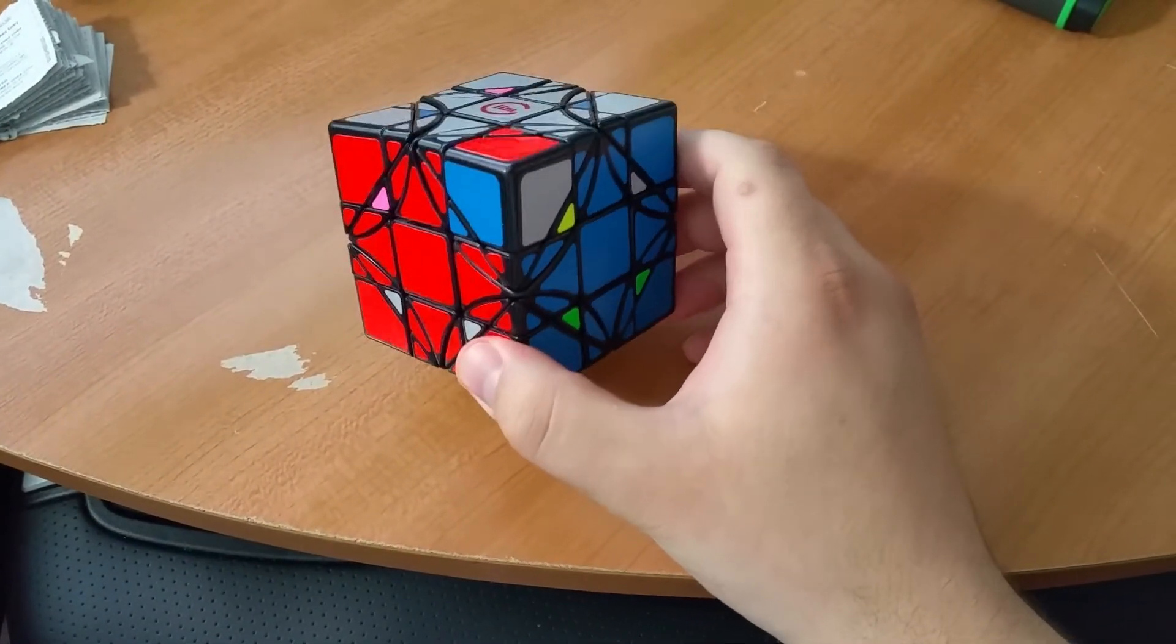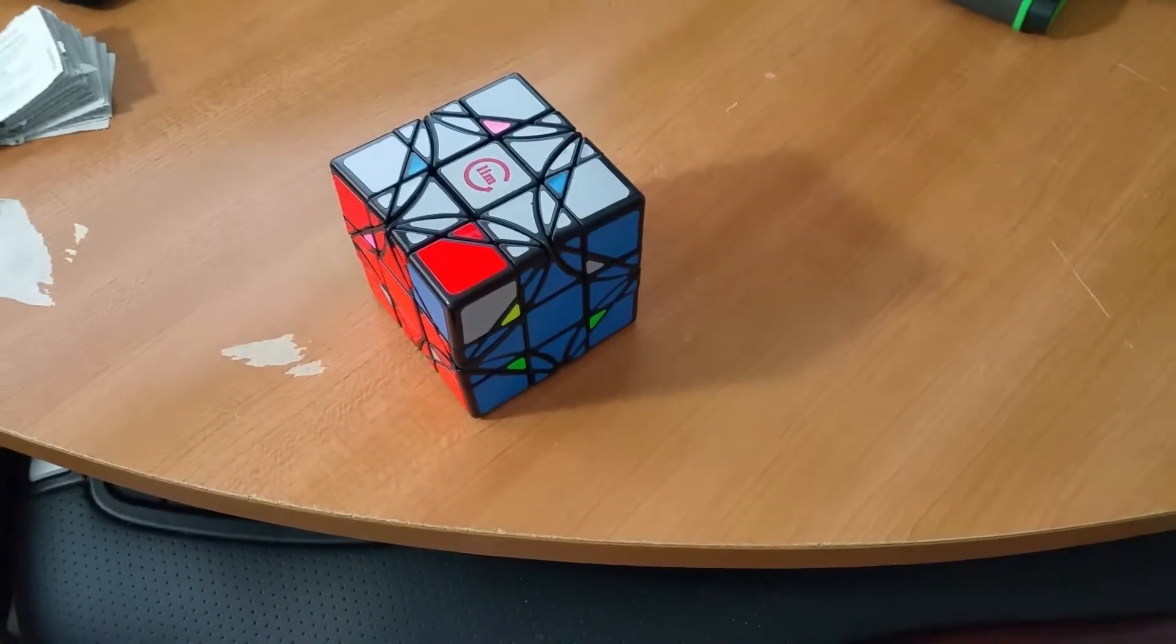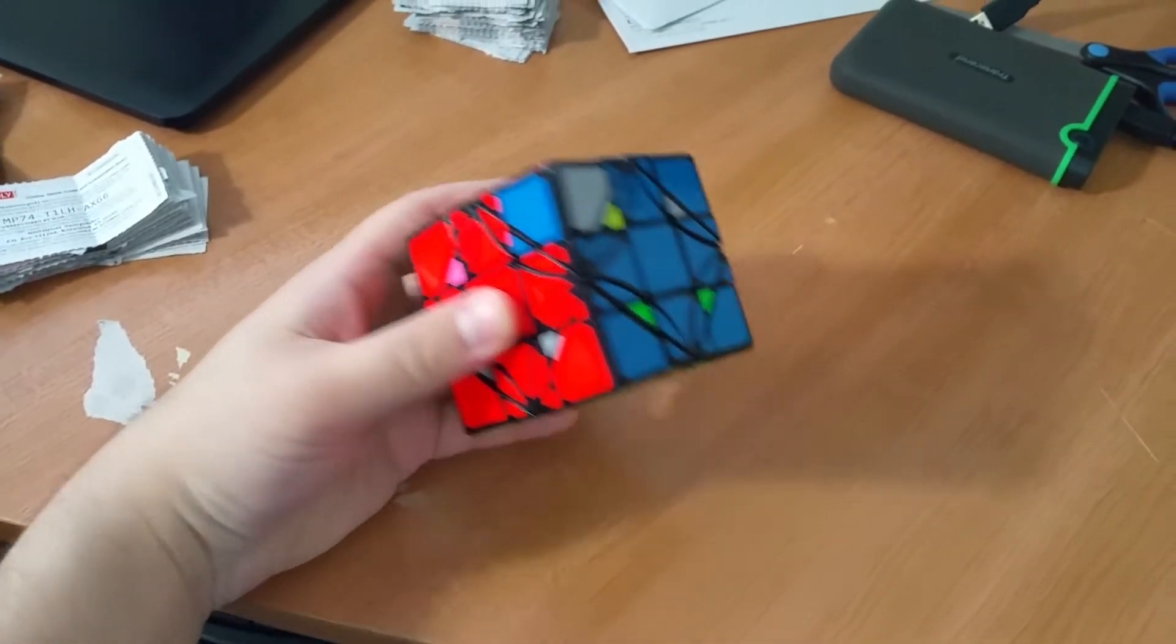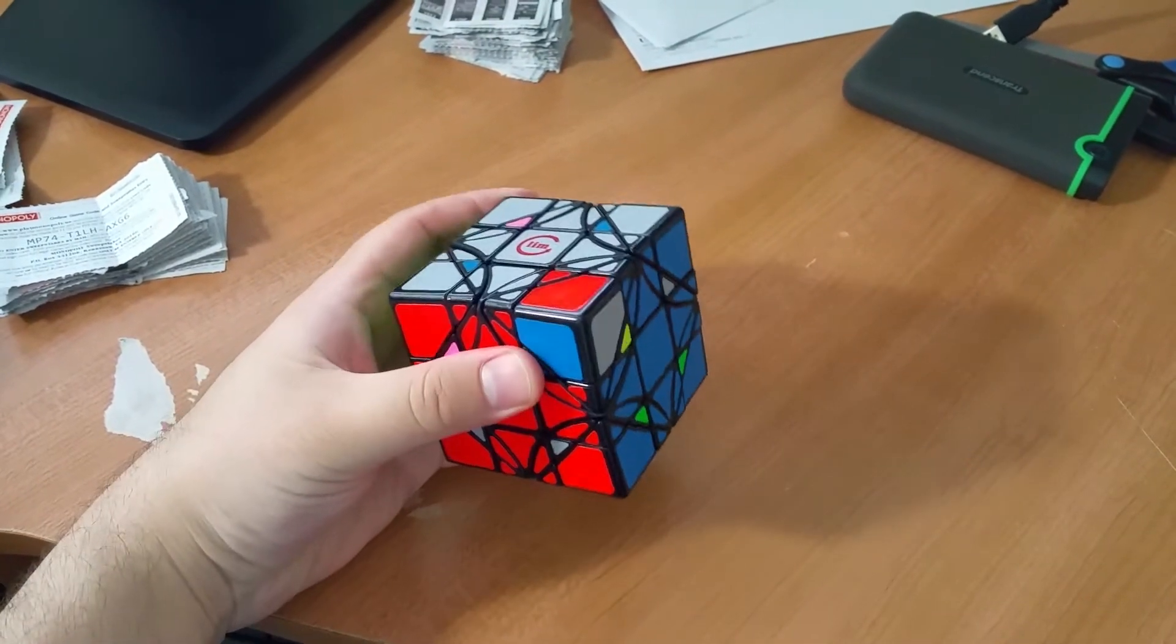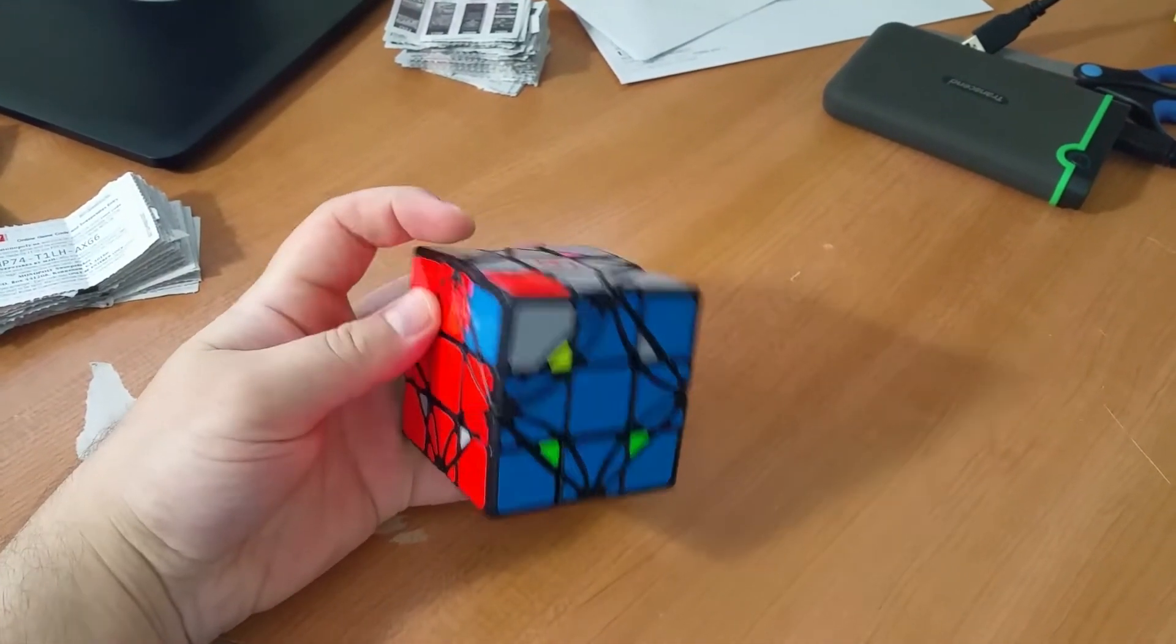I'm actually pretty happy with this because this is the first time I ever tried to solve a parity on my own without getting help from YouTubers like Twisty Puzzling. And I actually was able to discover a really quick fix for this parity that takes about 8 moves.